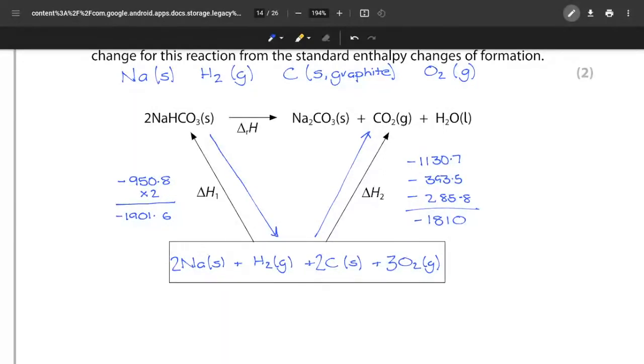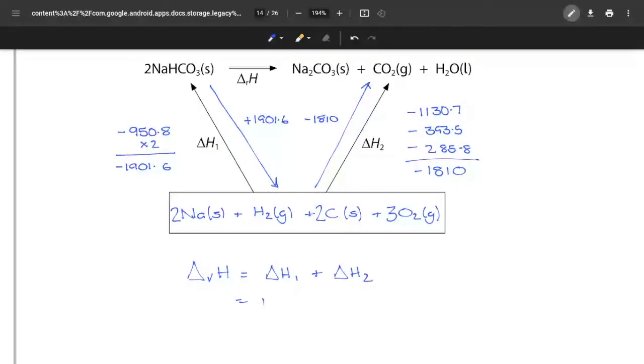In this case it would be a positive, so instead of my delta H1 being minus 1901.6, it's going to become plus 1901.6. I keep my other side exactly the same. Now my delta rH is going to be the delta H1 plus the delta H2, which in reality is going to be the 1901.6 minus the 1810, which gives me an overall answer...